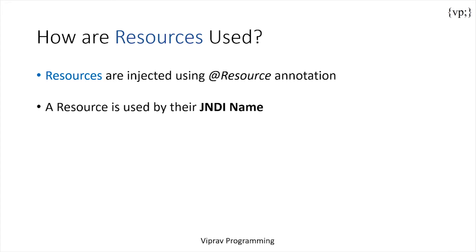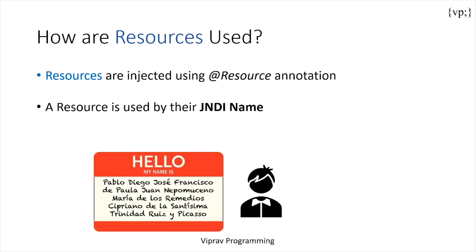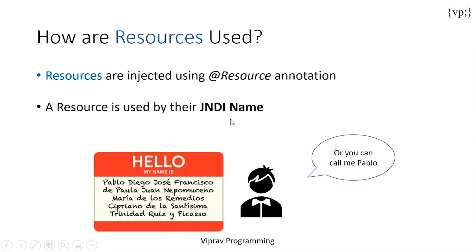A JNDI name is basically a separate name for an object. Let's say Pablo over here has this huge name that we kind of don't want to say the whole thing, so we'll just call him Pablo. This is the same thing for resource objects, where resource objects have huge names, but you can call them by their JNDI name for your convenience.